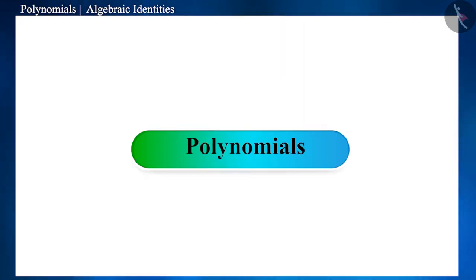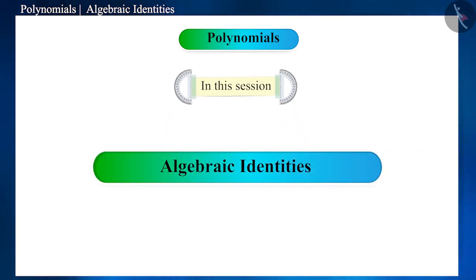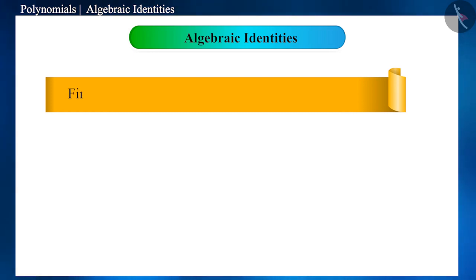Hello friends, welcome to this video on polynomials. Today we will discuss some questions related to algebraic identities. Find the value of (98)³ using the appropriate identities. You must have seen such questions - how would you solve it?